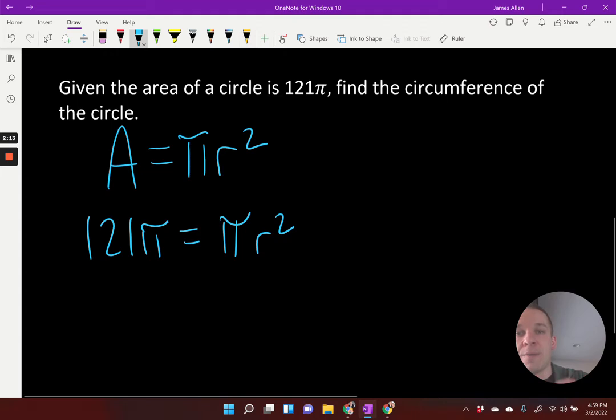So, once again, my π's are going to cancel, whether we divide on both sides with that, or we can also just see that, right? They're going to end up canceling each other out. And I'm left with 121 equals r squared.